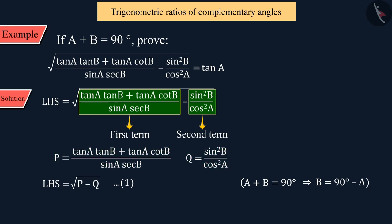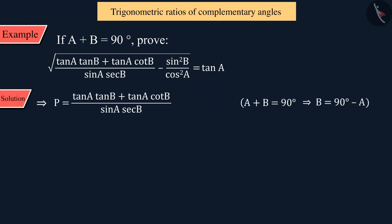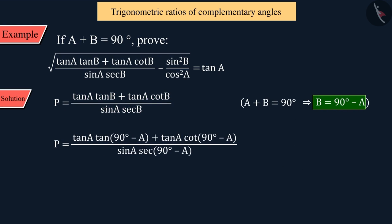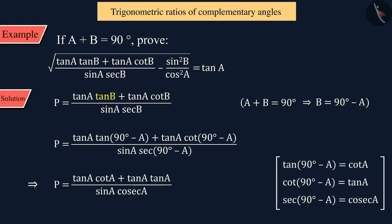Let us talk about the first term P. Here, we will substitute the angle B by 90 degrees minus A. This is how we convert tan B into cot A, cot B into tan A, and sec B into cosec A.